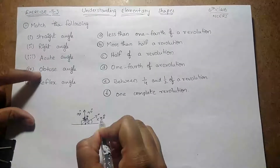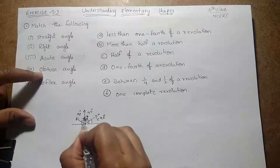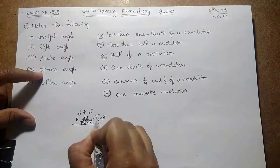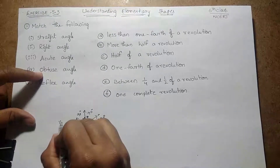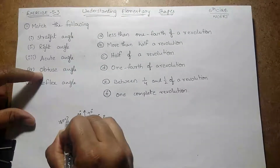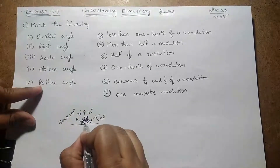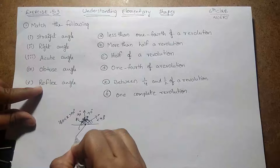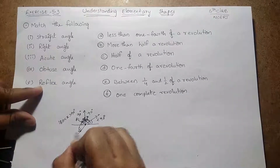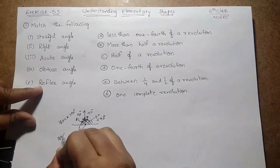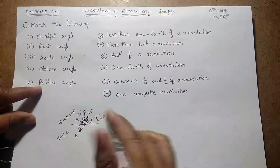Obtuse angle must be greater than 90 degrees and less than 180 degrees. Reflex angle is greater than 180 degrees. So this is a brief overview of the angles. Now if you take a clock similarly...